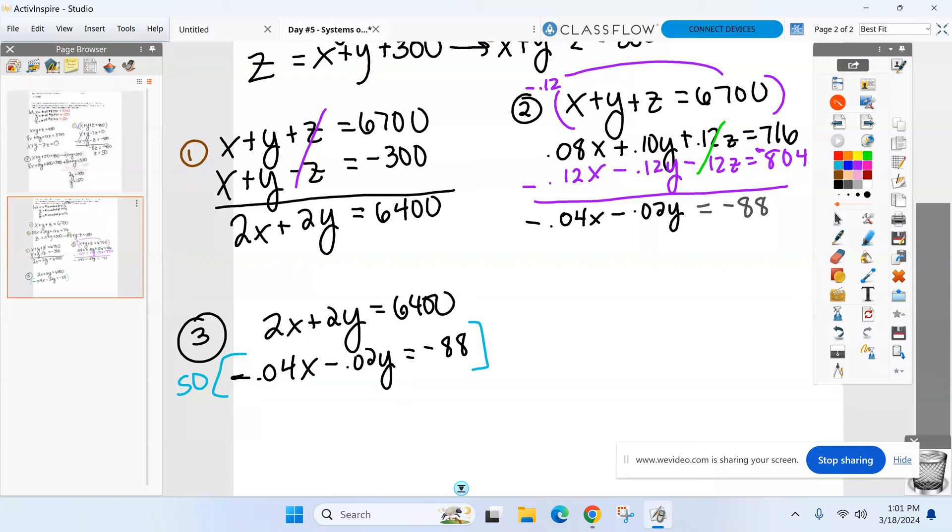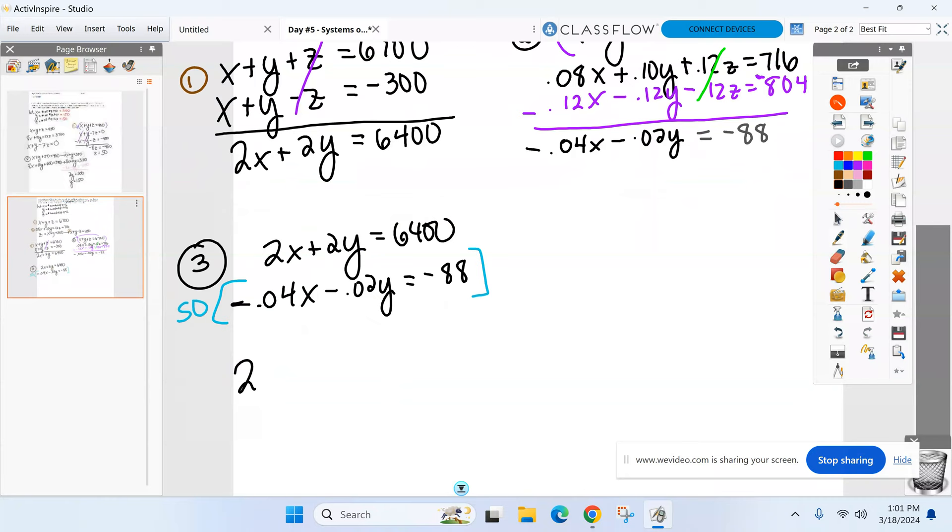Here you go, guys. So let's do this. I'll just rewrite that first equation. Nothing's changing there. And multiply everything by 50 now. So negative 2X. Let's see. That would have been 2... Is this just 1? Negative 1Y? And I have no idea what's going on over here. Negative 4,400.